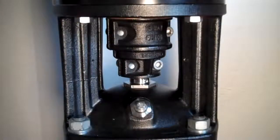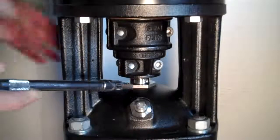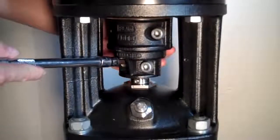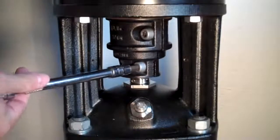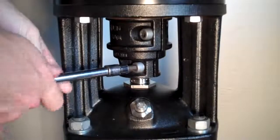Once the coupling guards have been removed, we'll go ahead and remove the coupling. There will be four bolts, two on either side. Just completely remove those and set them aside.